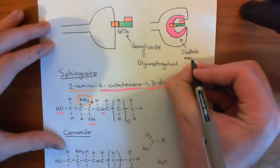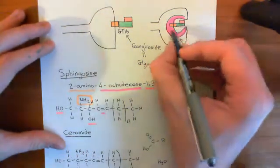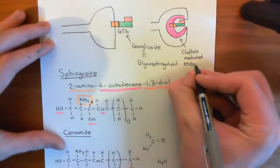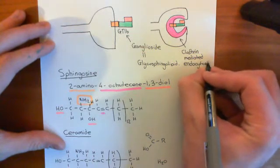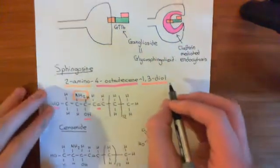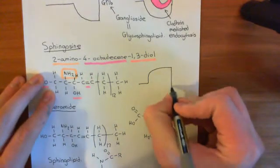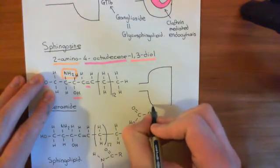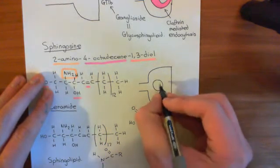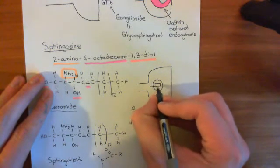After clathrin-mediated endocytosis, the vesicle eventually buds off and is in the cytoplasm at the axon terminal. The clathrin coat that covered the vesicle will then uncoat. So the next stage is: within the axon terminal, you will have a vesicle containing our GT1B ganglioside with our botulinum toxin inside.